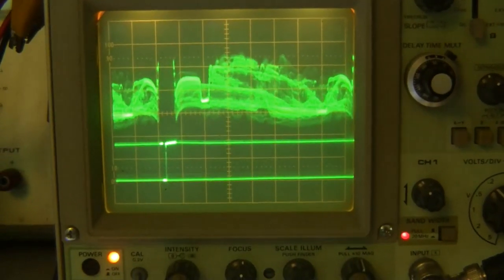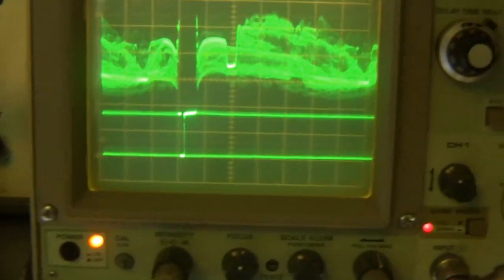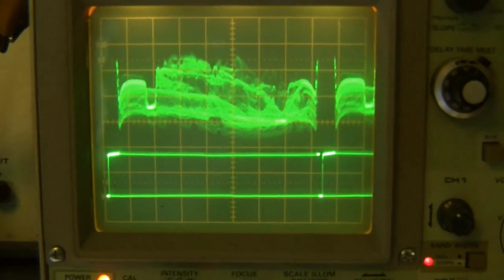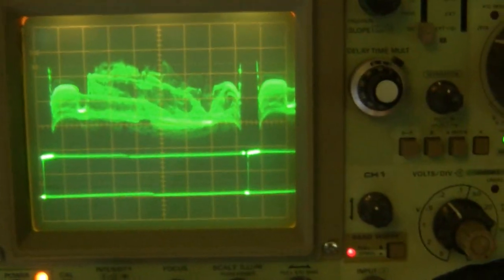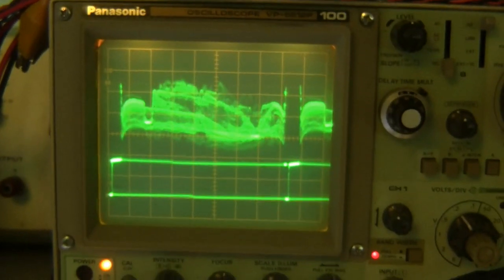But again, you'll note that there is no hum visible in the video signal. So that was the key reason for using a 60 cycle line lock.